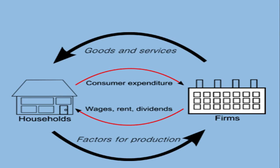Firms produce goods and services. When households receive wages, they spend that money purchasing goods and services from firms — this is consumer expenditure. Similarly, if a household owns property and rents it to a firm, the firm pays rent; the household then uses that rent money to buy goods or services from the firm. This is how money flows continuously from households to firms and back.